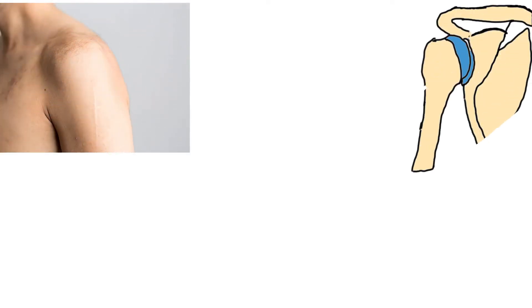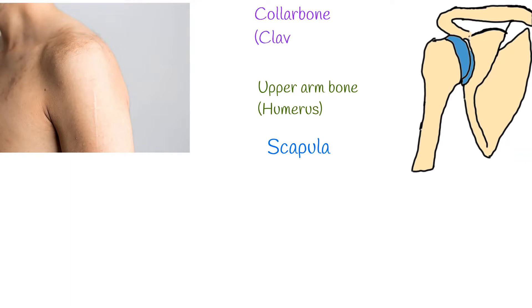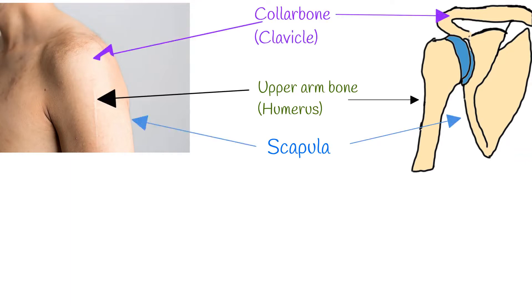The shoulder is made up of three bones: the upper arm bone called the humerus, the shoulder blade called the scapula, and the collarbone called the clavicle. The head of your upper arm bone fits into a rounded socket in your shoulder blade. This socket is called the glenoid.